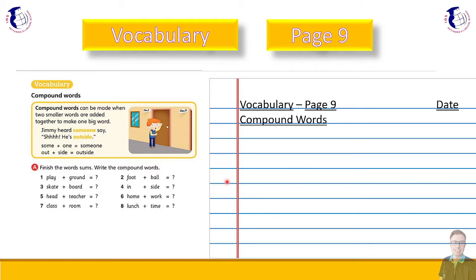Then you can start answering the questions by writing the question numbers in the left margin. So finish the word sums. All you've got to do is write the compound words on your paper. So one, two, three, four, five, six, seven, and eight. So you have playground, football, skateboard, inside, headteacher, homework, classroom, and lunchtime. Okay, so I suggest what you do, you pause the video now if you're watching it and you haven't done the lesson live already. And then unpause when you want to see the answers.